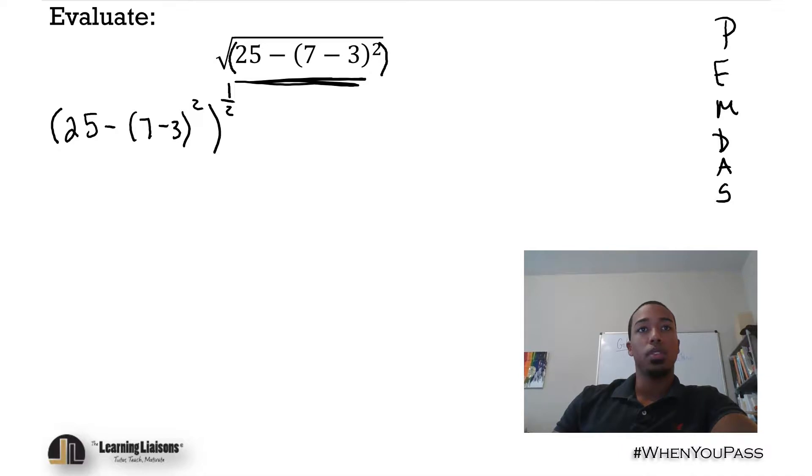But we don't really need to concern ourselves with that right now. Just know that the last thing we'll do is take the square root. So first let's take care of everything inside the square root. First off, what's 7 minus 3? That will be 4. So we can rewrite this as 25 minus 4 squared.